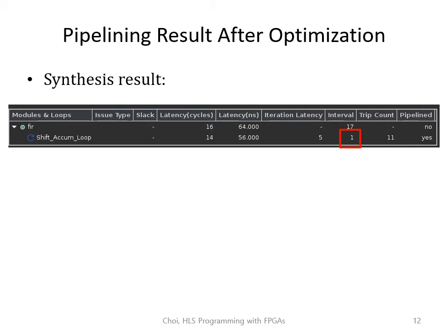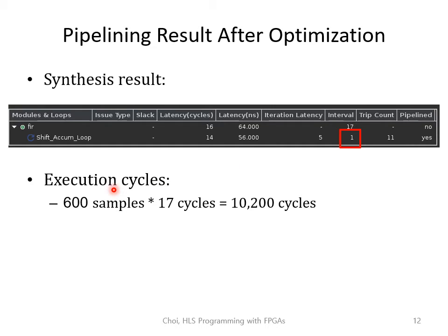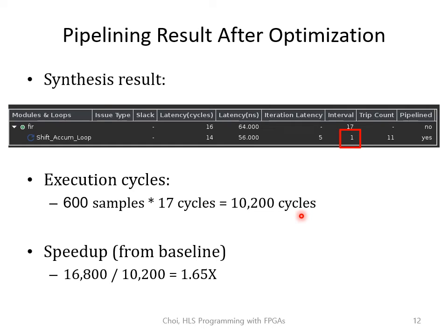Let's look at the synthesis result after code refactoring. We can see that the HLS tool has successfully reduced the II down to 1. It takes 16 cycles to process one sample, or 17 cycles per sample when processing multiple samples. Compared to the baseline, it has reduced from 28 cycles to 17 cycles. So the total execution cycle is now 600 times 17, or 10,200 cycles. Computing the speedup from the baseline pipeline implementation with II equals 2, it is currently 1.65x.